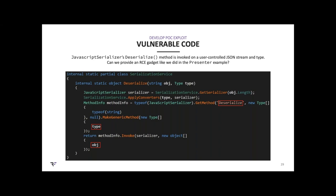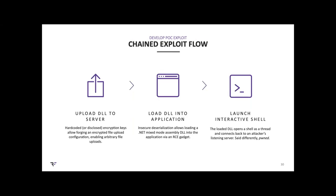The exploit flow: we first upload our .NET mixed mode assembly DLL, then load it into the application by using an AssemblyInstaller type during deserialization, and finally get an interactive shell. We trigger the same server-side deserialization logic twice: first passing a normal file upload configuration to accompany our DLL upload, then — instead of an async upload configuration — passing a serialized AssemblyInstaller to use as an RCE gadget.